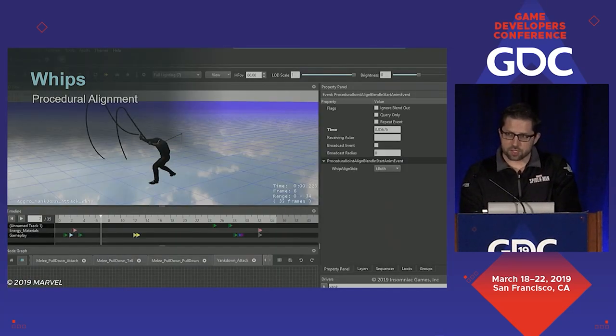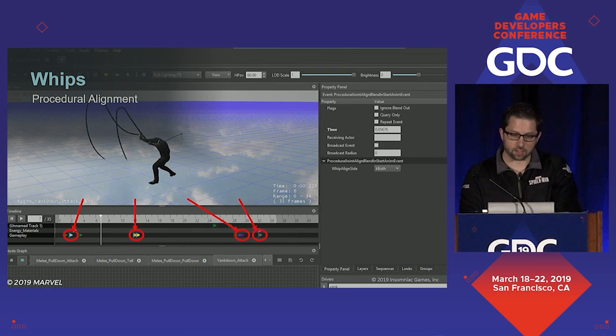This procedural alignment is controlled with four events: we start blending on, finish blending on, we start blending off, and we finish blending off.